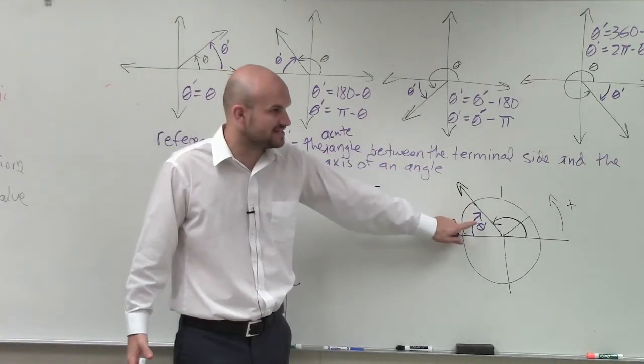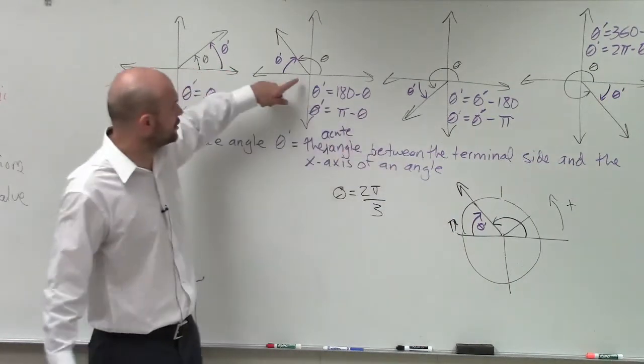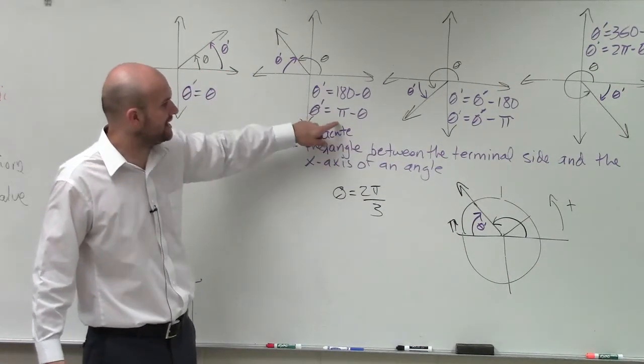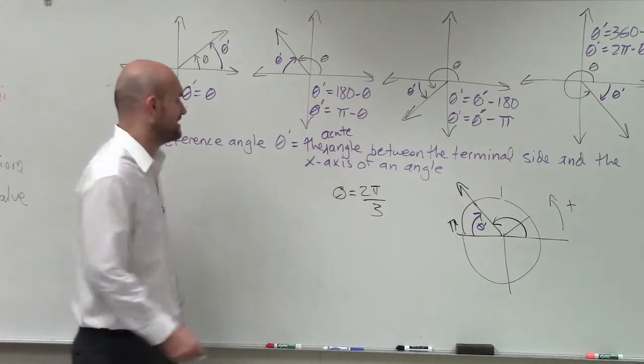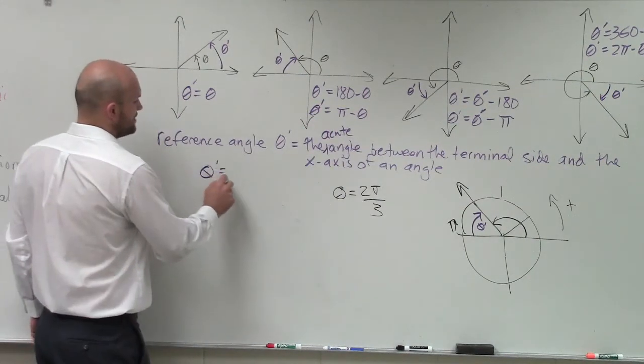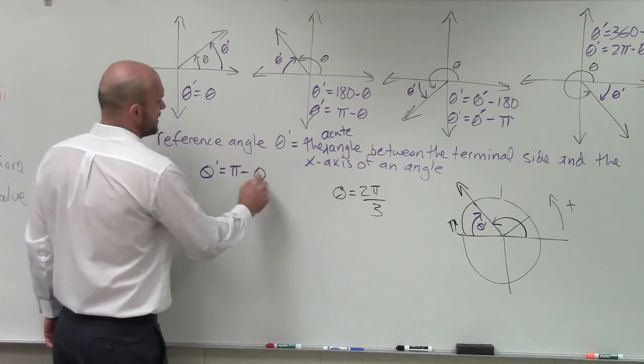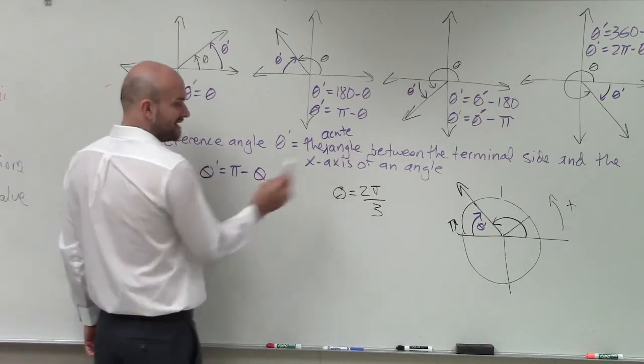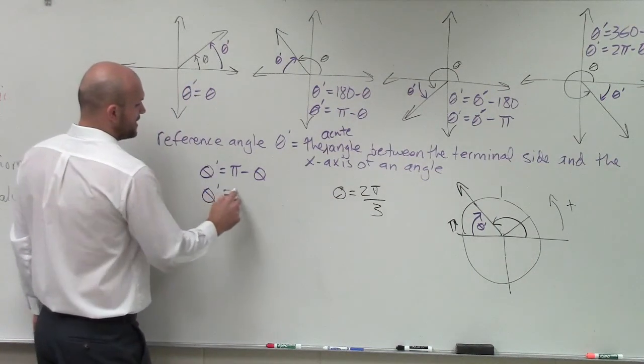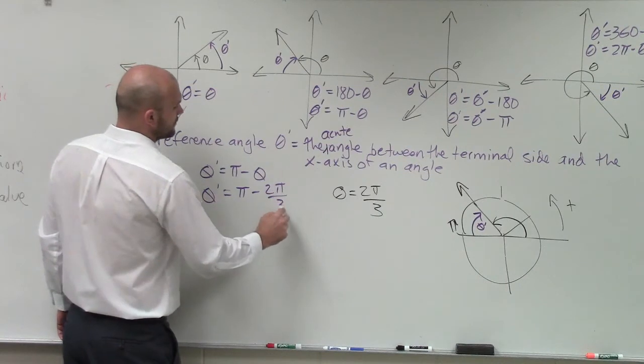So how do we find this? Well, this is in the second quadrant. The second quadrant tells us, since this is in radians, to do θ' equals π minus θ. So I write θ' equals π minus θ. Well, what's my θ? My θ is 2π/3. θ' equals π minus 2π over 3.